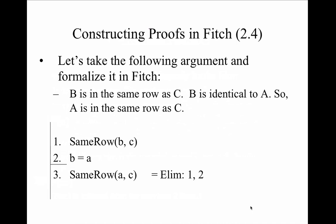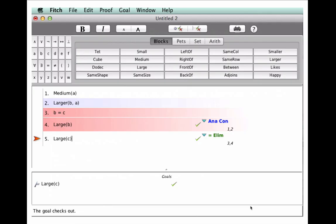Let's take an argument in ordinary language, look at it in symbolic logic notation, and see how the indiscernibles of identicals is employed in the identity elimination rule. We have: 'B is in the same row as C. In addition, B is identical to A, so A is in the same row as C.' In Fitch style: SameRow(B,C), B=A, therefore SameRow(A,C). The justification is identity elimination from lines 1 and 2.